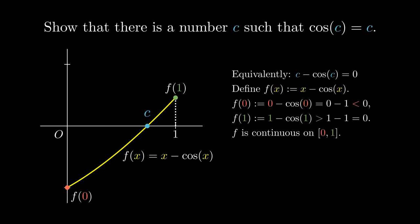More rigorously, we say that by the intermediate value theorem, there exists a real number c with the property that f(c) equals 0.